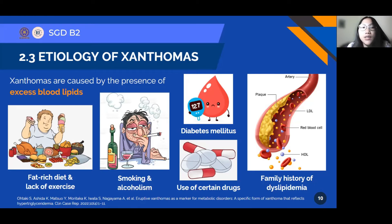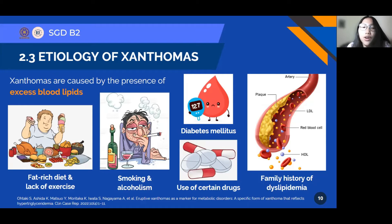People are most likely to develop Xanthomas if they have another, more severe health condition that causes an increase in blood lipids. Some of the risk factors of Xanthomas are conditions that can increase the risk of dyslipidemia, such as a fat-rich diet, lack of exercise, smoking, alcoholism, and certain diseases such as diabetes mellitus and hypothyroidism. In addition, a family history of dyslipidemia and a history of using certain drugs such as estrogen or steroids are also risk factors for dyslipidemia and Xanthomas.